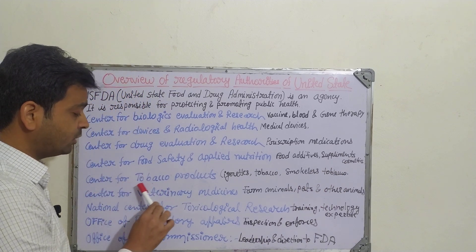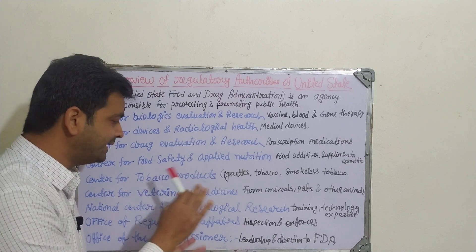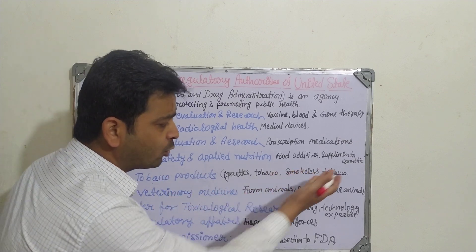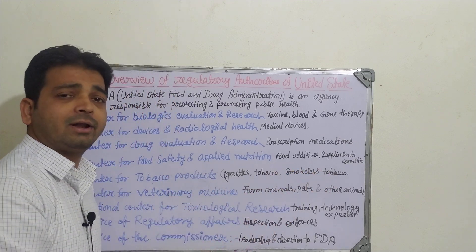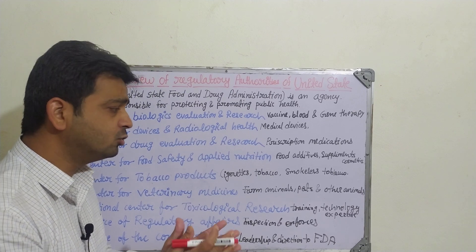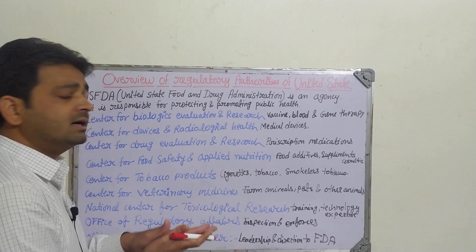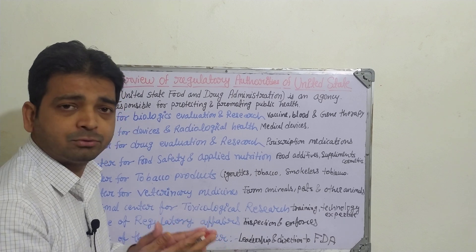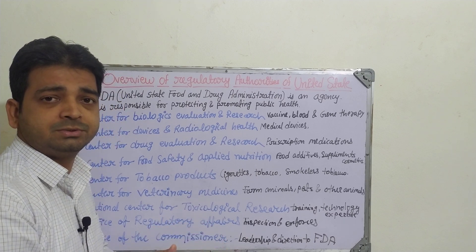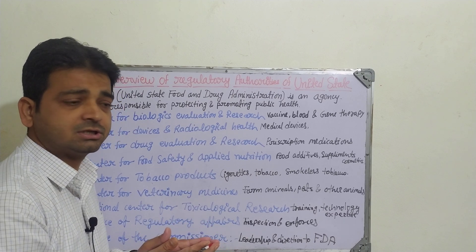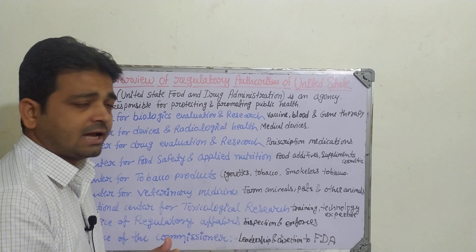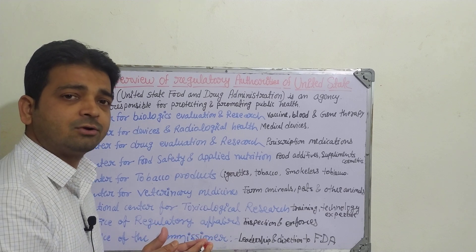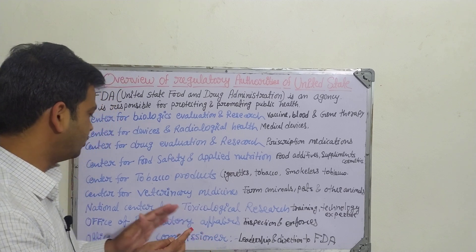The fifth one is the Center for Tobacco Products. As the name indicates, tobacco products like cigarette tobacco or smokeless tobacco such as Gutka, Kaini, Paan, and Jarda — all those things are monitored regarding what kind of production is supposed to be there for a particular manufacturer, how it has to be distributed, and all the restrictions, rules, and regulations involved.